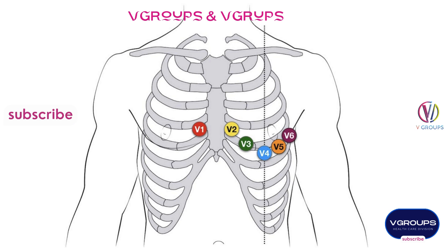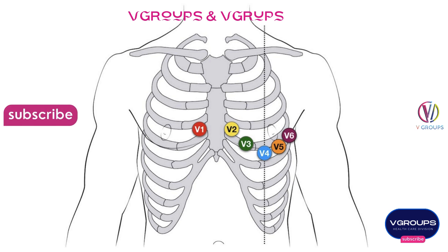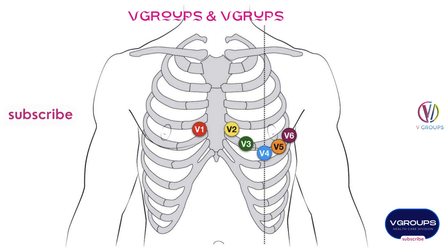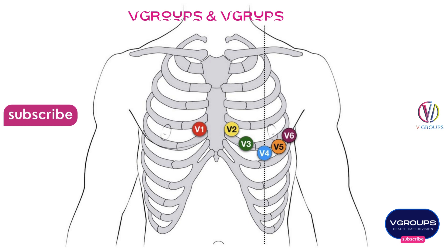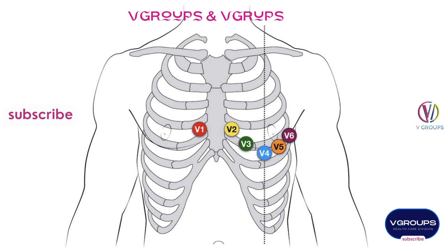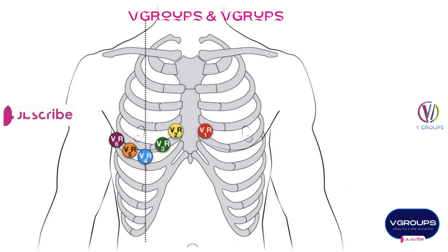V4-R ECG lead placement history: Ehat et al. first described the use of a right-sided precordial lead, CR4-R or V4-R, in the diagnosis of right-ventricular infarction, which had previously been thought to be electrocardiographically silent. Reference: 'Single right-sided precordial lead in the diagnosis of right-ventricular involvement in inferior myocardial infarction,' M. Hart J., 1976.